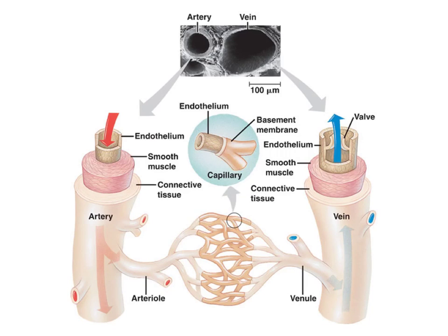We're going to have a look at the circulatory system. One of the things you have to consider is what is the job of the circulatory system. The job of the circulatory system is to move materials around in the body — so transport — and also it plays an important part in the immune system.